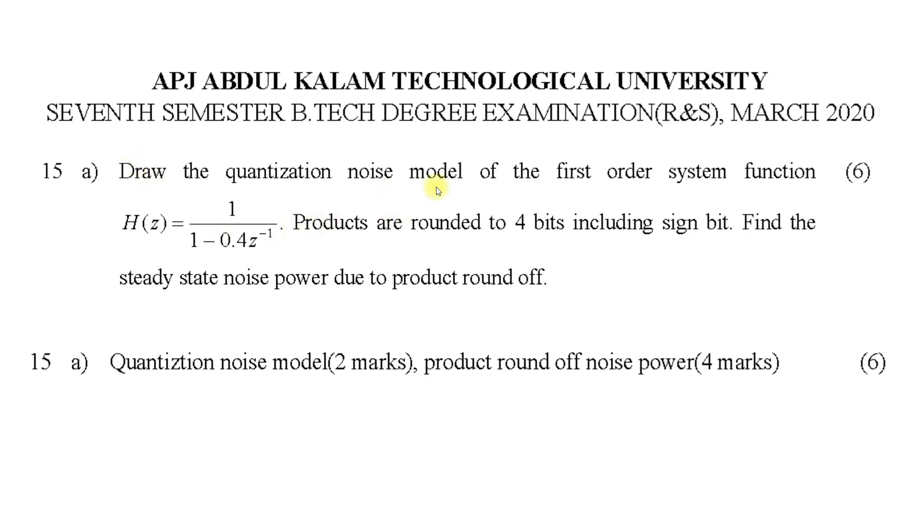Draw the quantization noise model for the first order system function H(z). Products are rounded to 4 bits including sign bit. Find the steady state noise power due to product round off. Six marks question: quantization noise model.